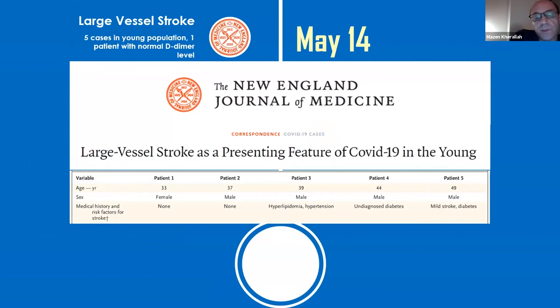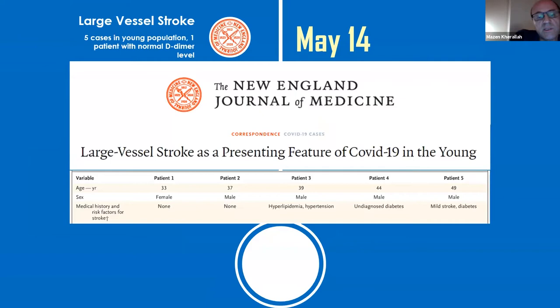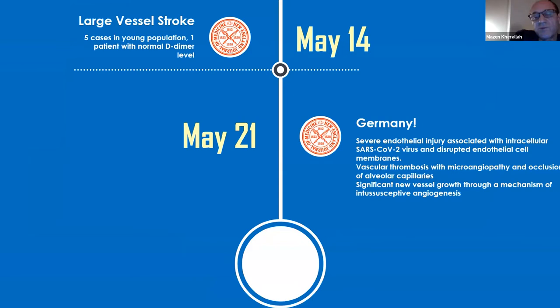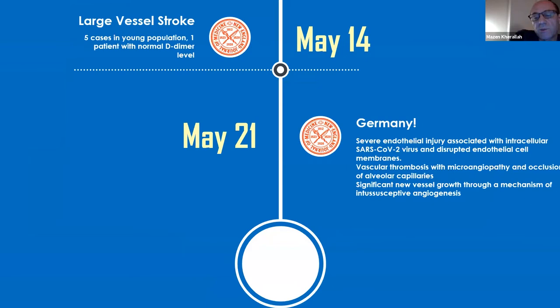On May 14th, five cases of large vessel stroke were described in the New England Journal of Medicine associated with COVID-19. Just that same day, a study from Germany on autopsies of 7 COVID patients compared to 7 influenza patients showed severe endothelial injury associated with intravascular SARS-CoV-2 virus. They saw the virus inside endothelial cells — intracellular — with disrupted endothelial cell membranes, vascular thrombosis with microangiopathy, and significant new vessel growth through antisusceptive angiogenesis.